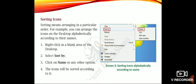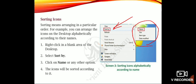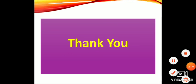Sorting icons means arranging them in a particular order. For example, you can arrange icons on the desktop alphabetically according to their names, or by size, or by date. Right-click on the desktop, go to 'Sort by' in the menu, and you can sort the icons accordingly. This is chapter number 3. We will learn the rest of the chapter in the next video. Thank you, have a nice day.